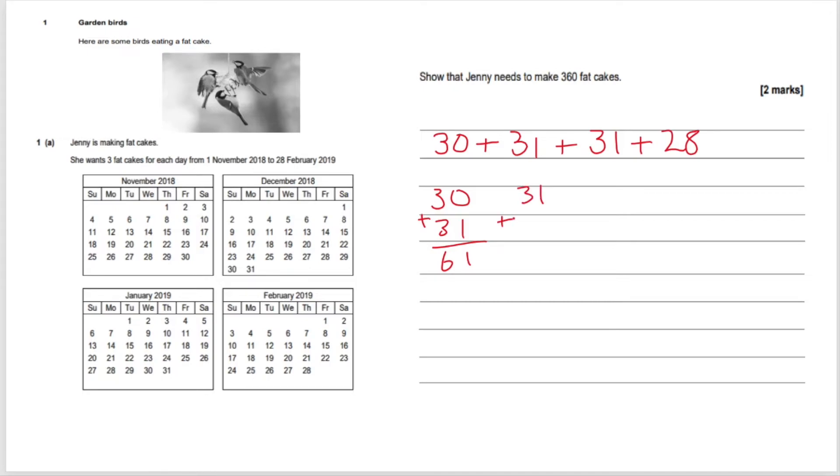So let's just add these up. So 61 plus 59, that's 120 days. So now we're going to multiply those days by three to get our answer.